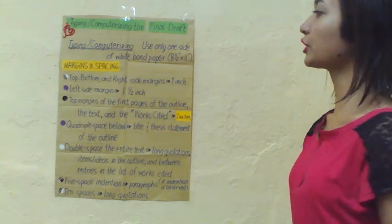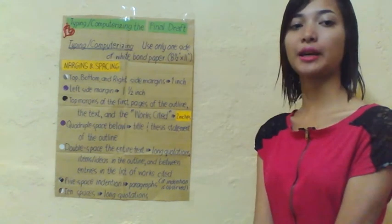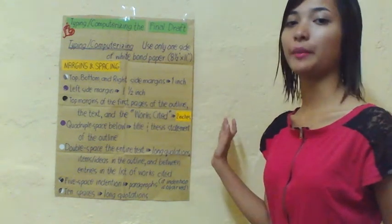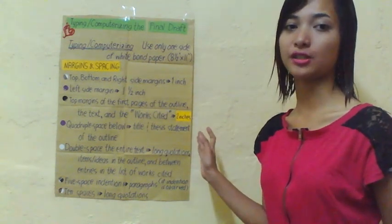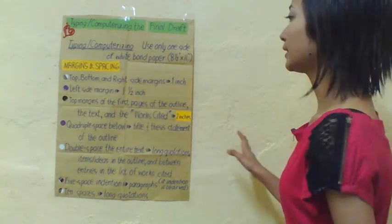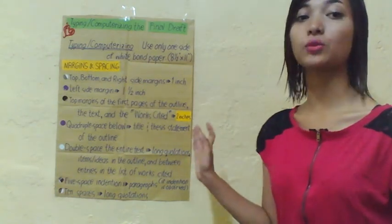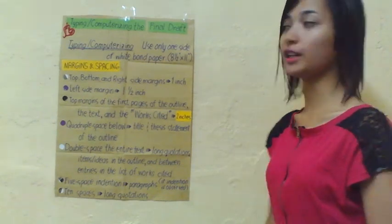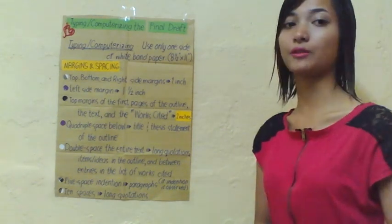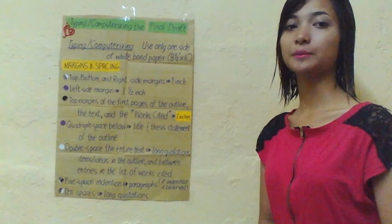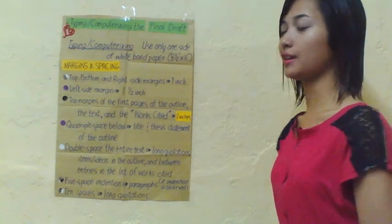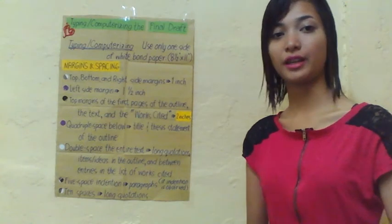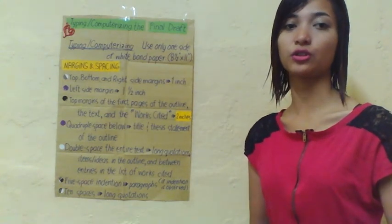Regarding margins and spacing for typing and computerizing the final draft: the top, bottom, and right side margins are all one inch. But the left side margin is one and a half inch. The reason we have one and a half inch is to give space when we hard-bind the research.